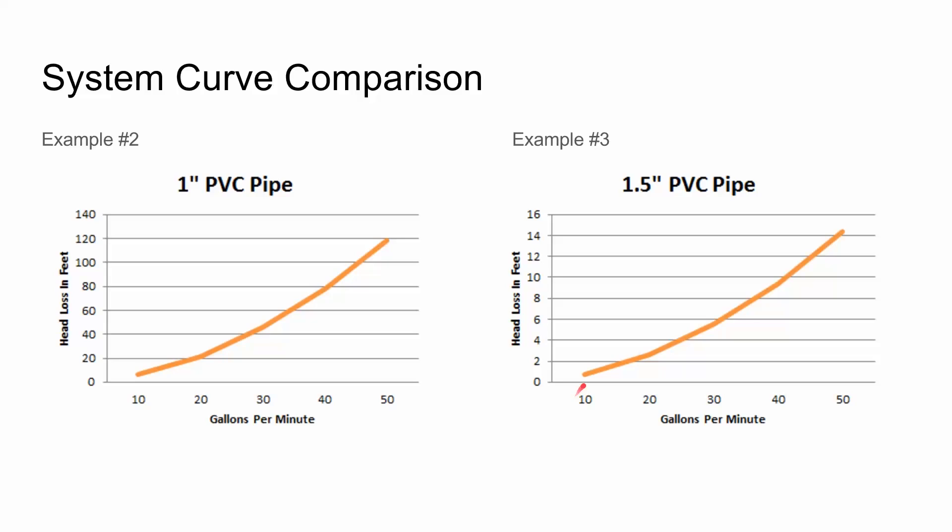With the inch and a half pipe, you're going to have almost no friction loss because it's going to be about one foot of friction loss, which is less than half of a PSI.